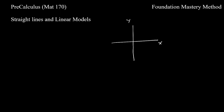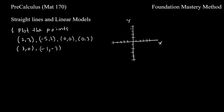Straight lines and linear models. We need to plot the following points. x=2, y=3 gives us the point (2,3). Then negative 5, 2: count to the left side negative 5, then up 2, giving the point (-5,2). Next, (0,0) is at the center or origin. Then (0,3): x is 0, y is 3, so the point is (0,3).